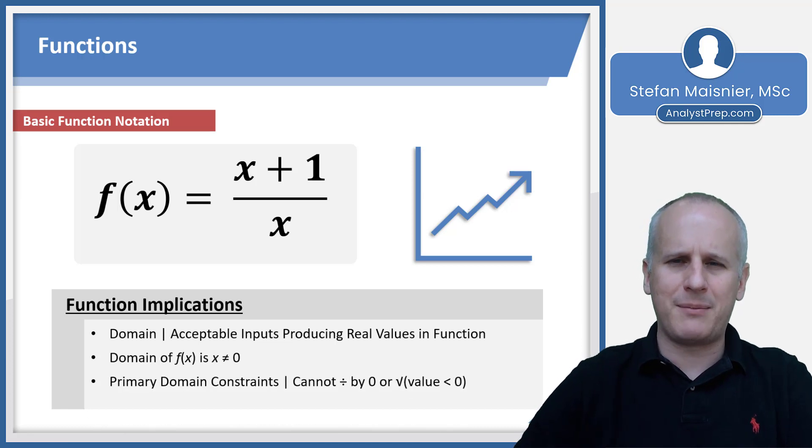Your primary domain constraints are going to be similar to the one we see here, which is that you cannot divide by zero, or you cannot square root a value that is less than zero. If you try to take a square root of a negative, you get what is known as the imaginary number. Happily, the GMAT Focus Edition will not involve non-real values such as infinity, which is what the result is when you divide by zero, or imaginary values, which is the result when you square root a negative value.